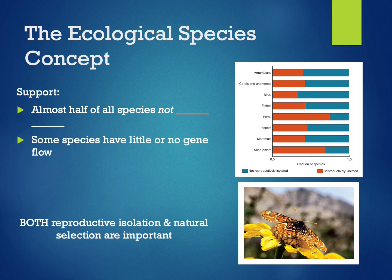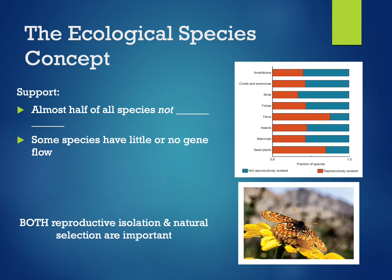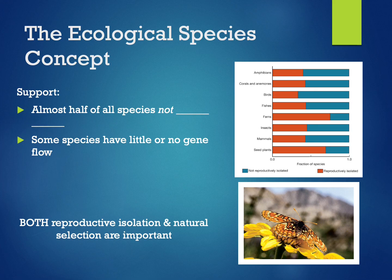Support for this comes from evidence showing that almost half of all species are not reproductively isolated. A survey of almost 300 plant and animal species found that almost half would not qualify as different species according to the biological species concept. Furthermore, there are species which have very little or even no gene flow. The checkerspot butterfly lives in isolated pockets throughout California. Researchers found that they rarely fly more than 100 yards from their place of birth, yet live in populations sometimes separated by hundreds of kilometers. Gene flow does not keep them genetically similar — instead, natural selection is probably serving that role. Nevertheless, researchers agree that both natural selection and reproductive isolation are important in maintaining species boundaries.